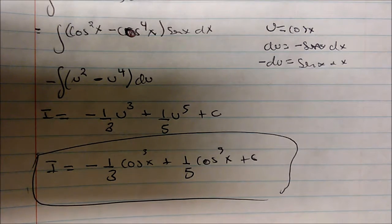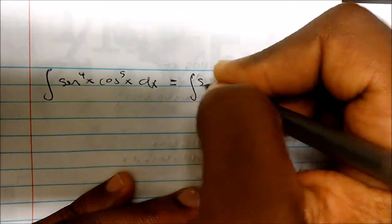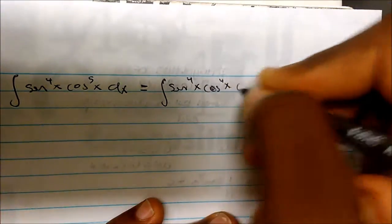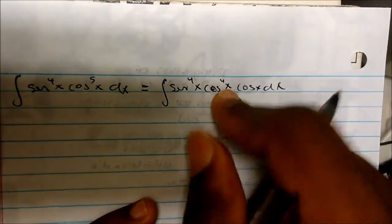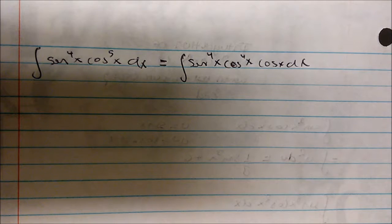Let's look at another one, a slightly more complicated one. What if I wanted to take the integral of sine to the fourth of x times cosine to the fifth of x dx? Cosine is the odd power, so I'm going to borrow one from that. This equals sine to the fourth of x times cosine to the fourth of x times cosine of x dx — all I did was borrow one from the odd power. We said we borrow one from the odd power and then use the identity.